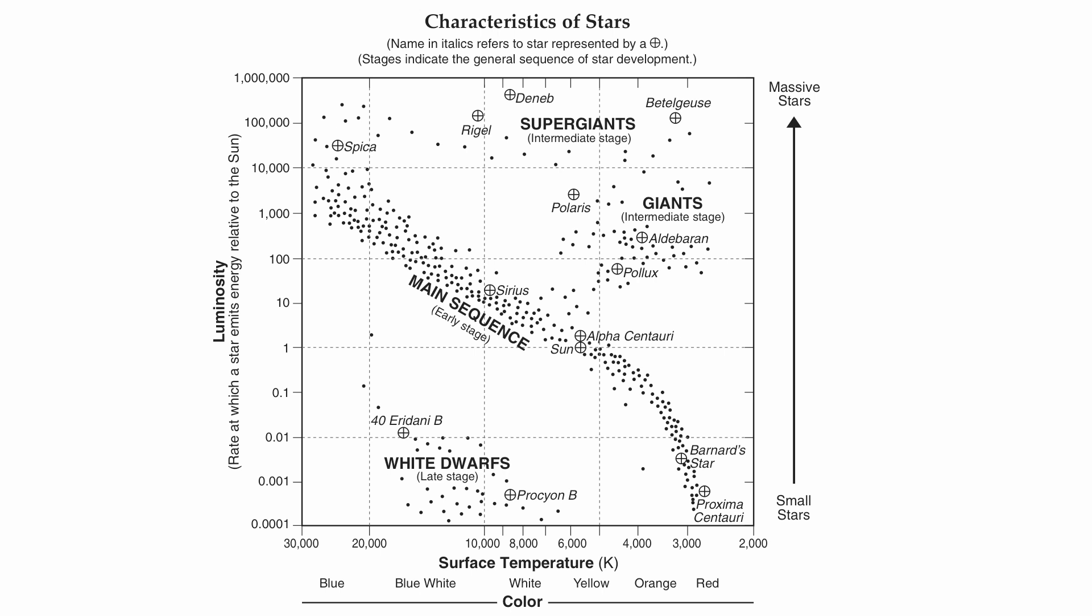Along the left-hand side, you have luminosity, how bright the star is going to be. Along the bottom, you have temperature, and you have color. You'll notice that the color red is cooler than the color blue.